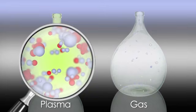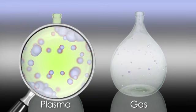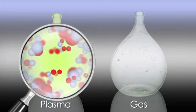In plasma, electrons are released from their orbits around a nucleus, creating a soup of free electrons and nuclei.